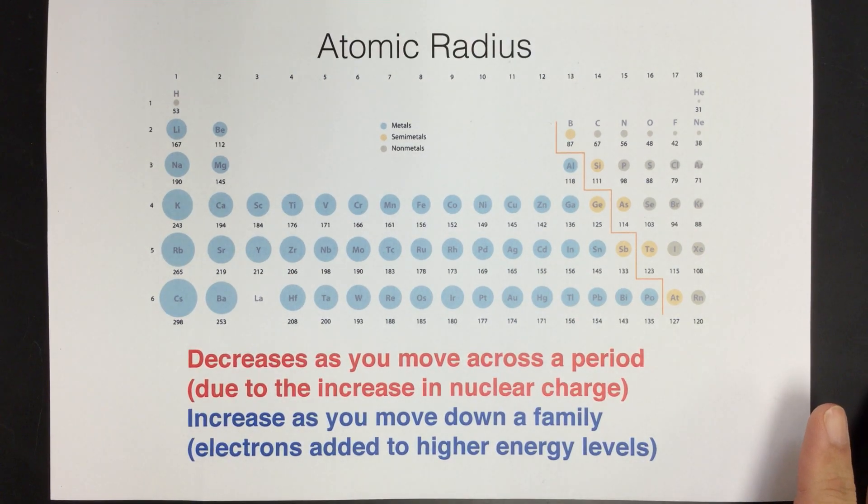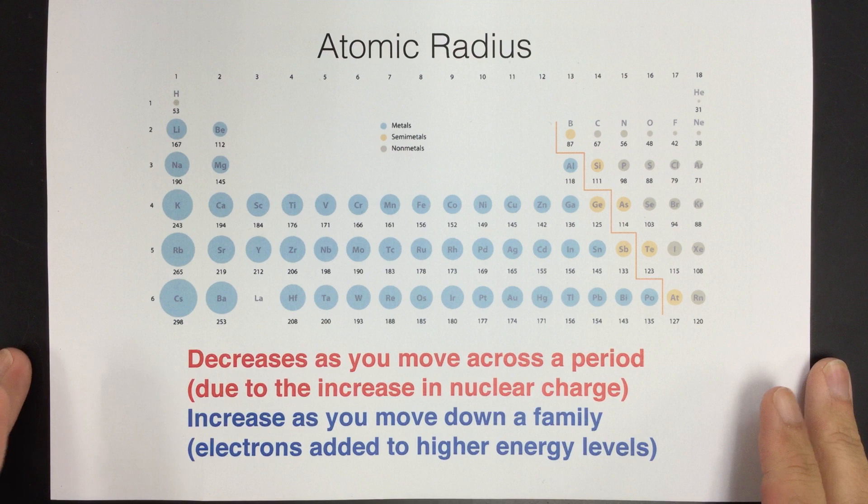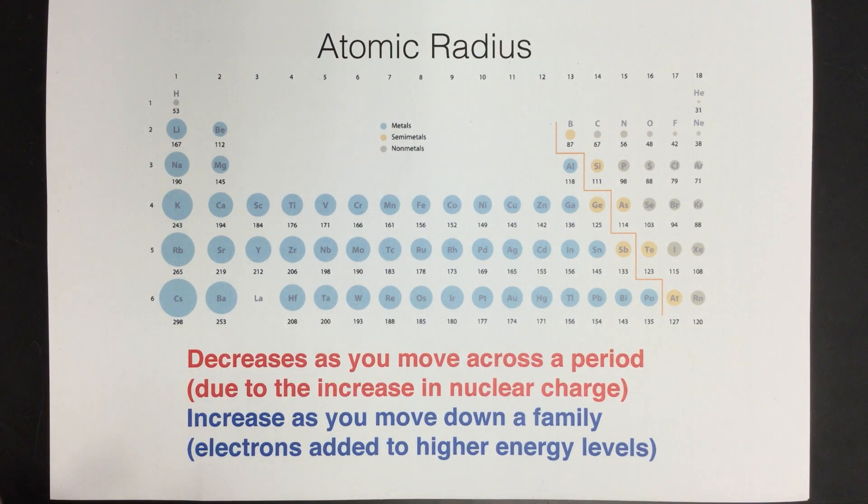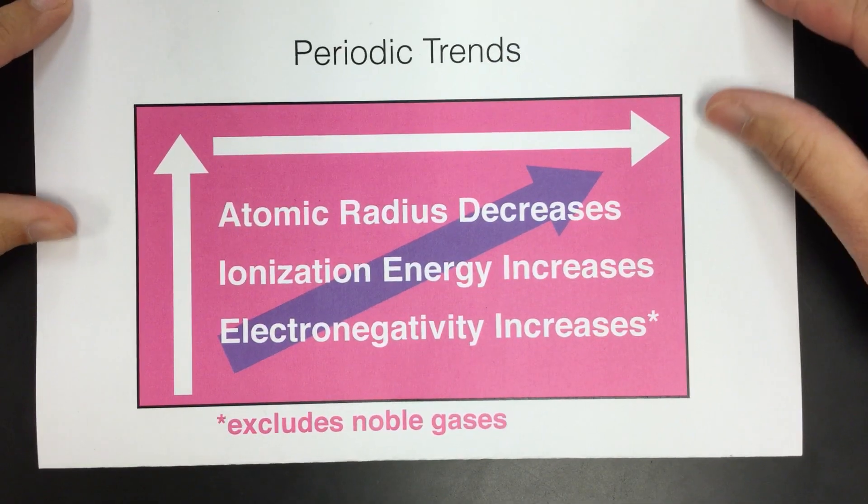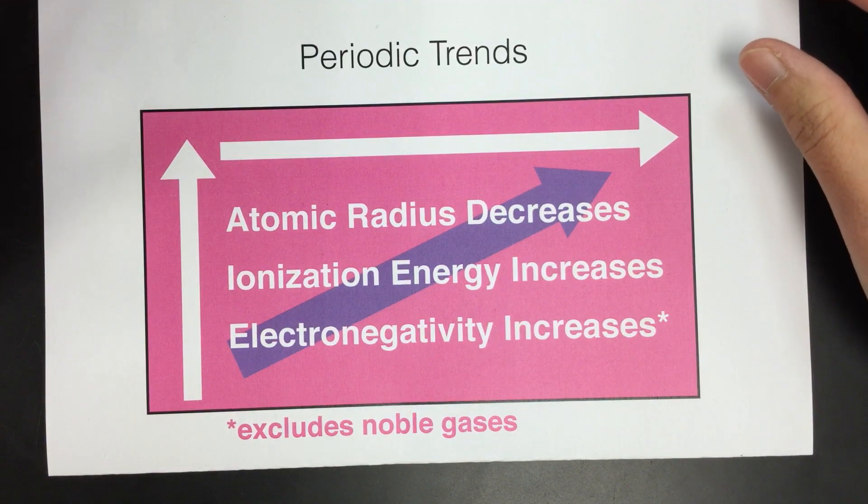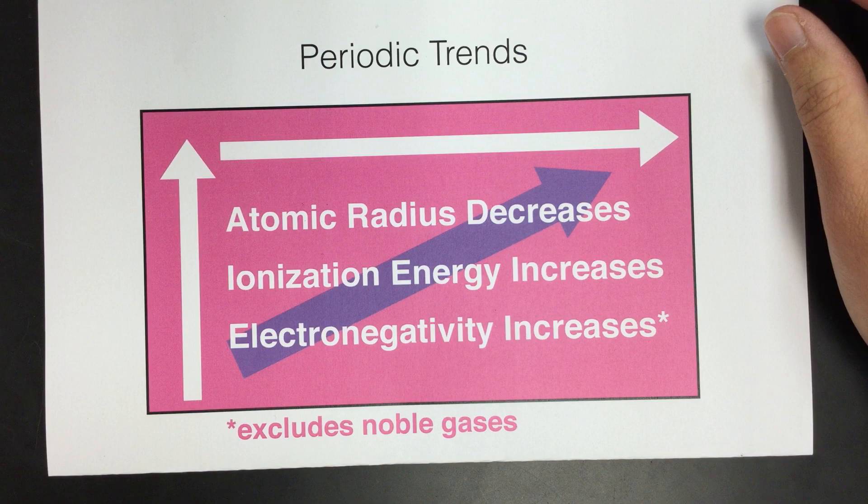All right, these are going to be a series of videos on periodic trends and other things related to periodic trends in this unit on the periodic table. This video is about atomic radius, which I believe is the most important trend because we can describe all of the other trends that we're going to learn in terms of atomic radius. So you want to make sure that you understand the atomic radius trend really well because it will help you to determine the other trends.